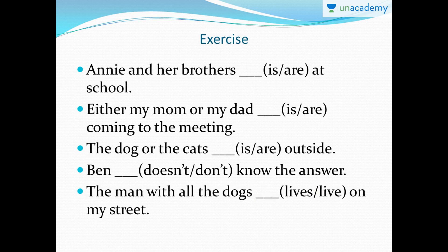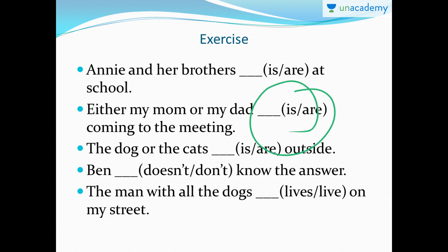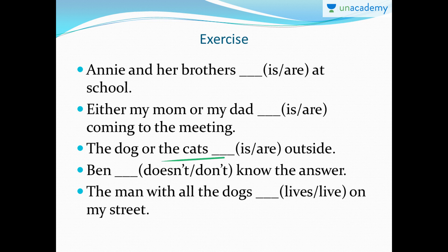So here is an exercise. If you guys want to take it in the form of a test, please pause the video. The answers are in the following slide. Let's do the sentences individually. 'Annie and her brothers are at school' — simple, connected by 'and.' 'Either my mom or my dad is coming to the meeting' — either/or with two singular subjects, so the verb is singular. 'The dogs or the cats are outside' — we have 'or' with a plural subject closest to the verb, which is 'cats,' so the verb is plural: 'are.'